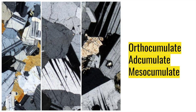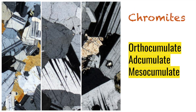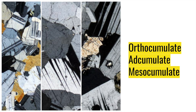Moving on to textures generally associated with magmatic ores. We have cumulus texture, which results from the gravitational settling of denser ore minerals within a crystallizing magma. The most common example is chromite, which occurs as a cumulus phase related to pyroxenes. The cumulates are named according to their dominant mineralogy and the percentage of mineral crystals relative to their groundmass. The three different types of cumulates are adcumulates, mesocumulates and orthocumulates. Adcumulates contain 100–93% accumulated magmatic crystals in a fine-grained groundmass.